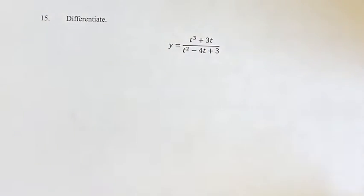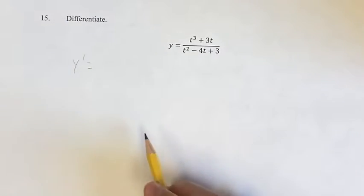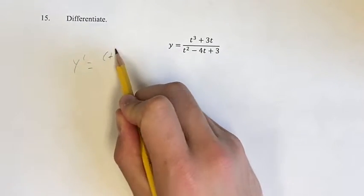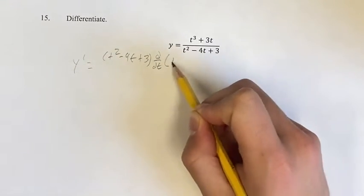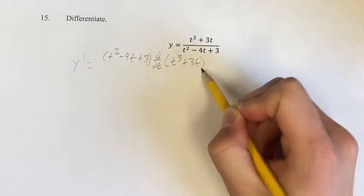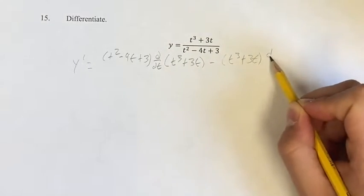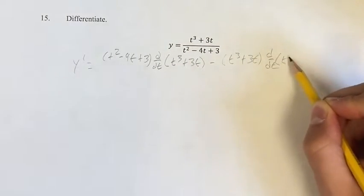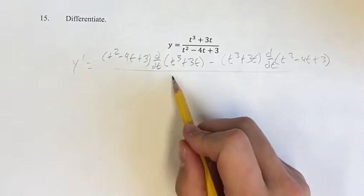So noticing that we have a fraction here, we can use the quotient rule. So our derivative is going to be the denominator times the derivative of the numerator minus the numerator times the derivative of the denominator. And this is going to be over the square of the denominator.